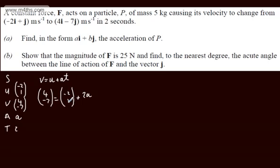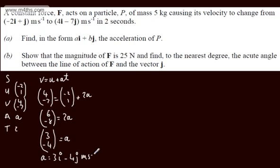Subtracting the initial velocity vector from both sides, we're going to have 6 minus 8 is equal to 2A. Dividing both sides by 2, we can see 3 minus 4 is equal to A. So the acceleration in terms of i and j will be 3i minus 4j, and this is meters per second squared.